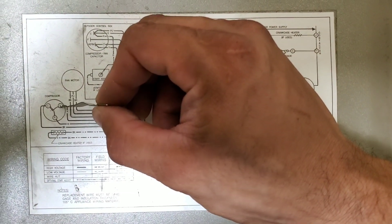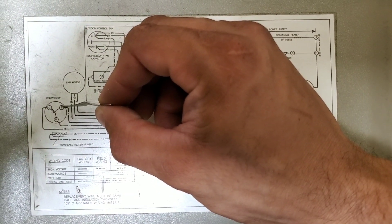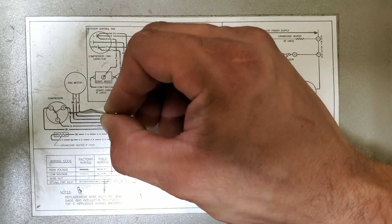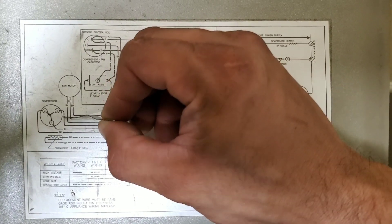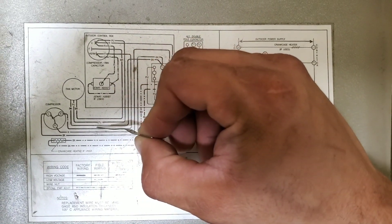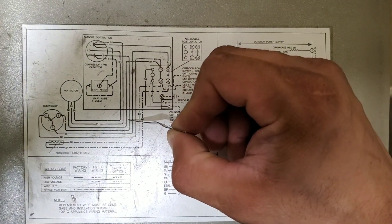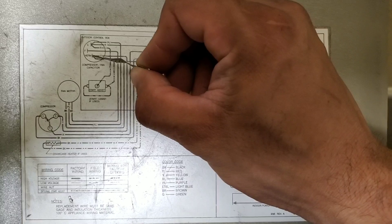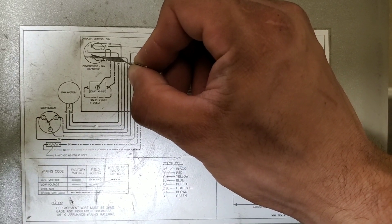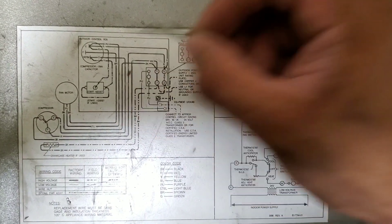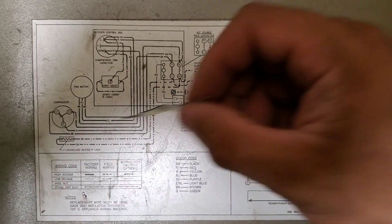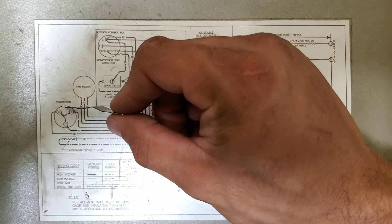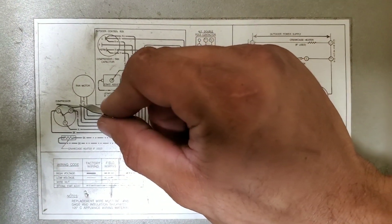The last wire on our compressor is our start. You can see here it's labeled Y which is yellow and that's going to feed to the arm on our run capacitor.